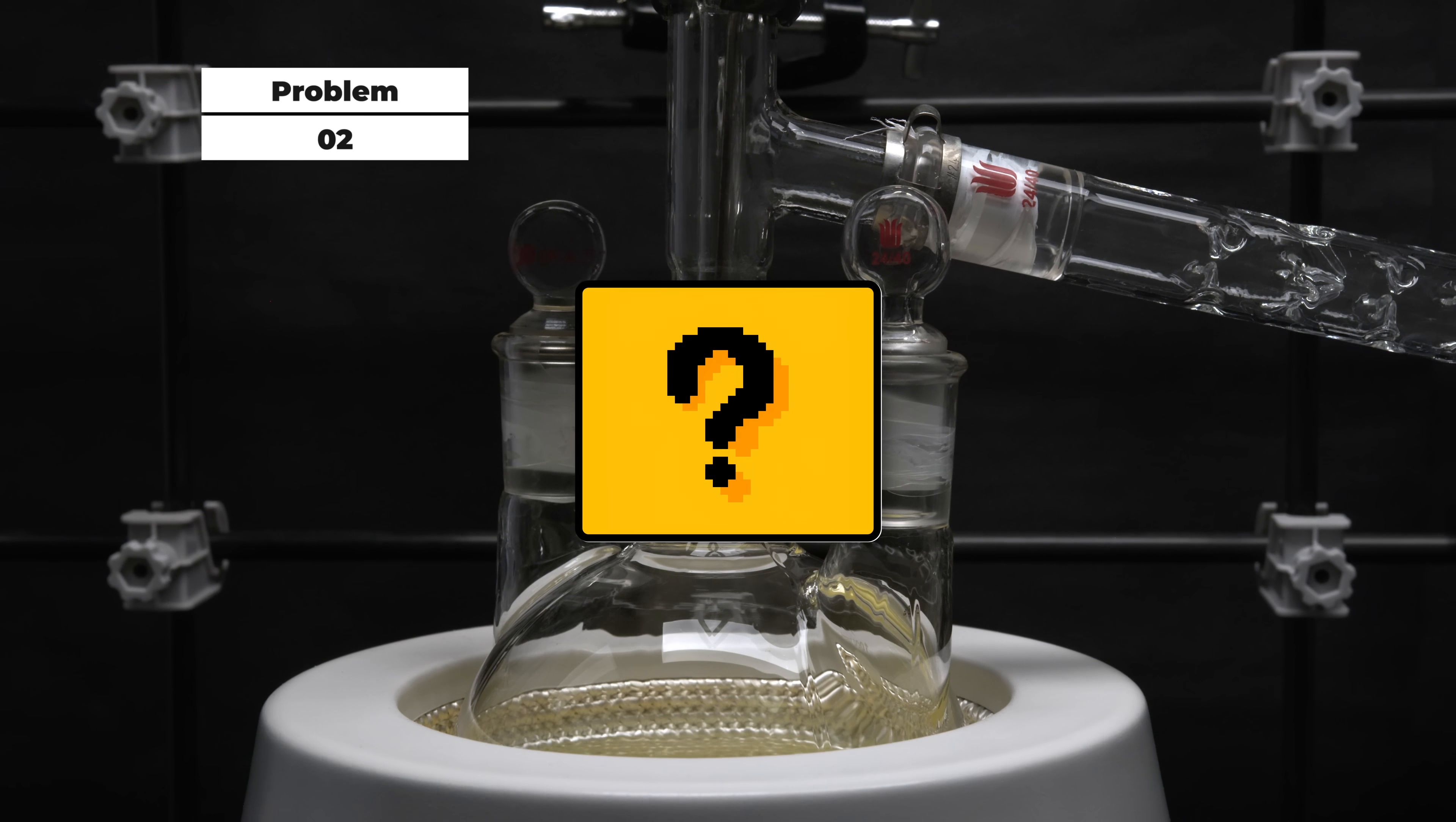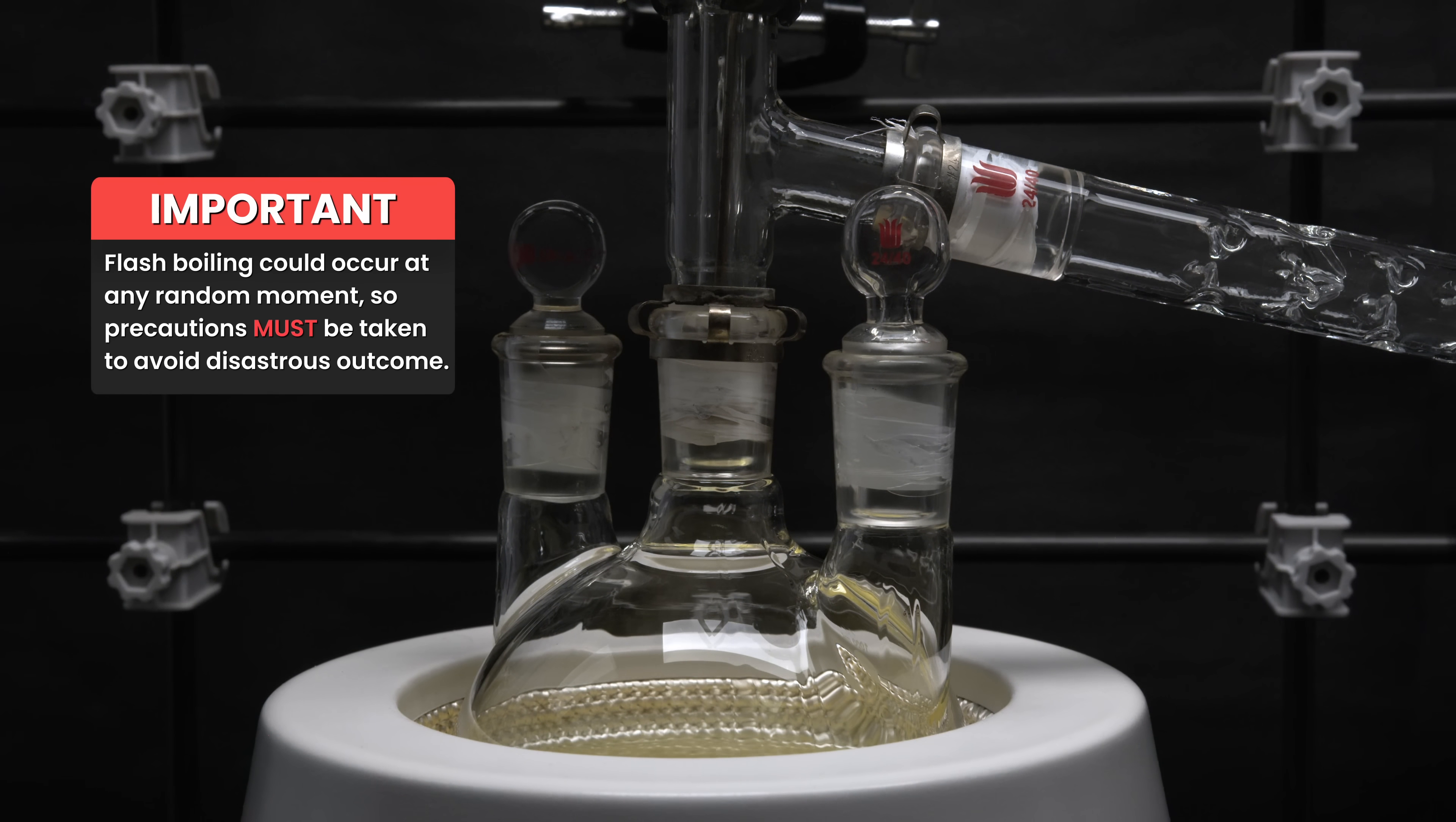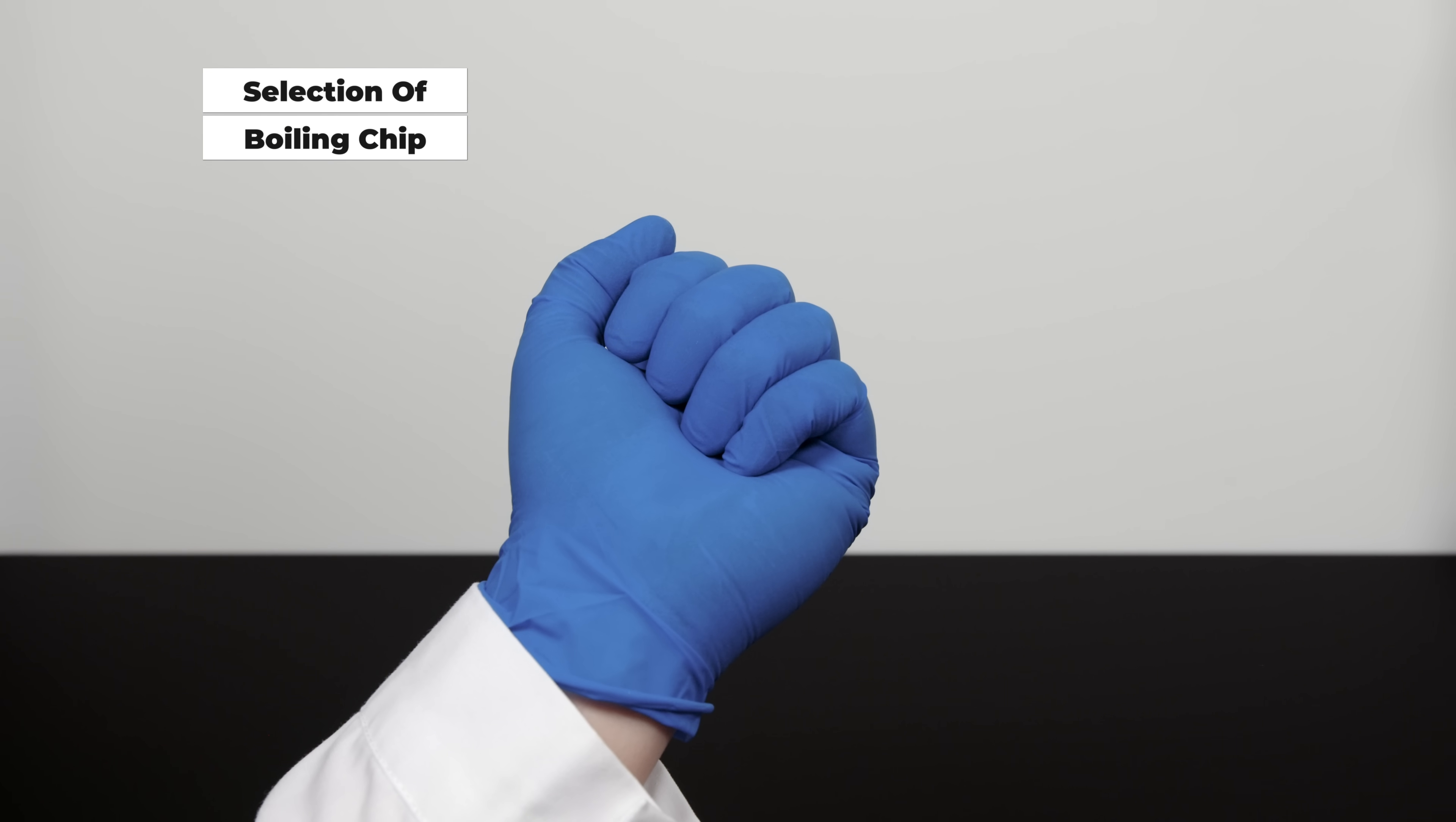This brings us to problem number 2: violent bumping or unstable boiling. As I just mentioned, flash boil or bumping can occur even just because of the steep temperature gradient. It can also occur due to insufficient nucleation sites or critically quick dripping back to the flask. The solution to this is the second component: the boiling chip.